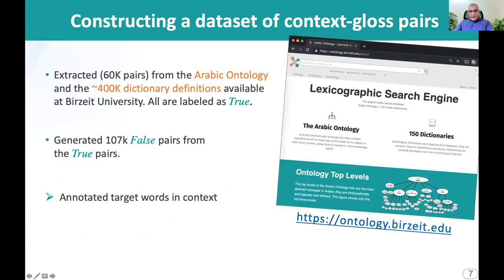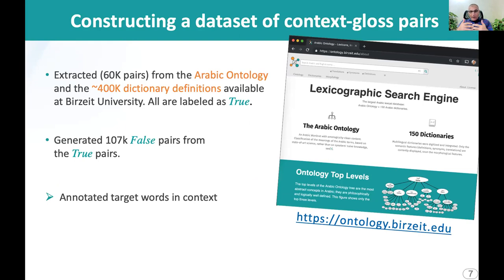Our dataset was constructed from Birzet University's lexicographic database, which contains the Arabic ontology and about 400,000 dictionary definitions. They are raw definitions, so we had to extract pairs from them. We extracted about 60,000 pairs, which we consider true pairs. From the true pairs, we generated the false pairs by cross-relating the contexts and the glosses.